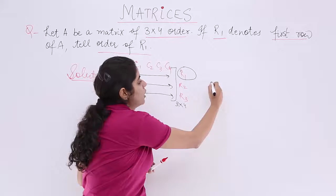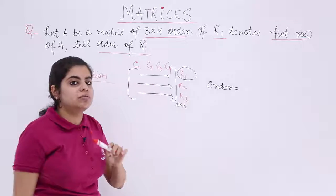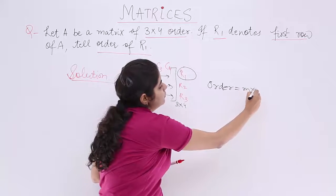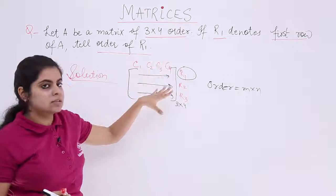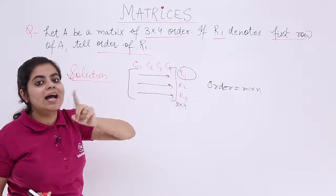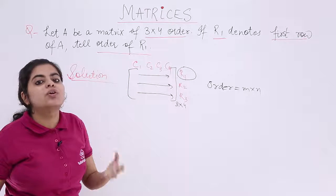Order, first you need to know what is the order. Order is always number of rows into number of columns. You know it is always M by N. If I am asked what is the order of this matrix, it is 3 by 4. But I am not asked this time the order of the matrix, rather order of the row.